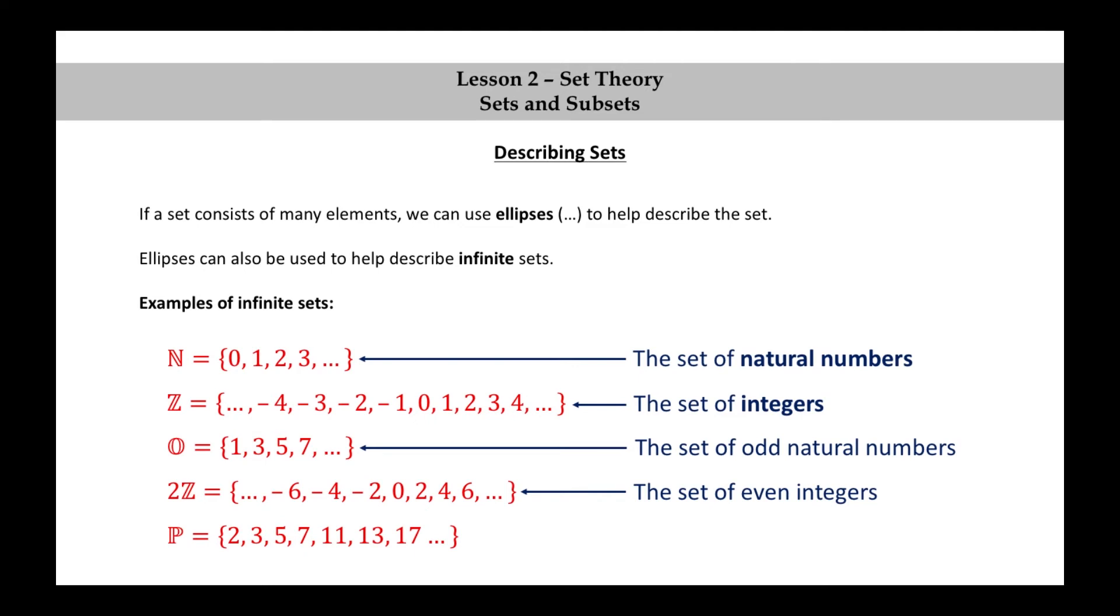P equals 2, 3, 5, 7, 11, 13, 17, and so on. This is the set of prime numbers.